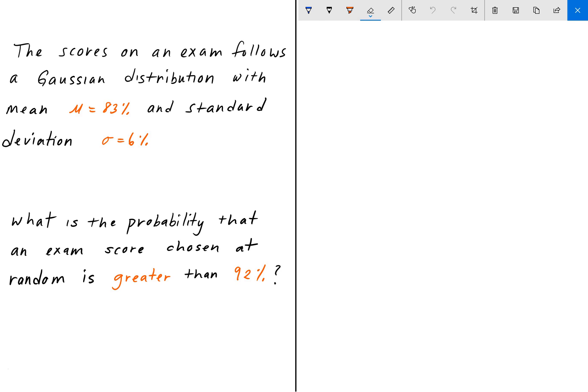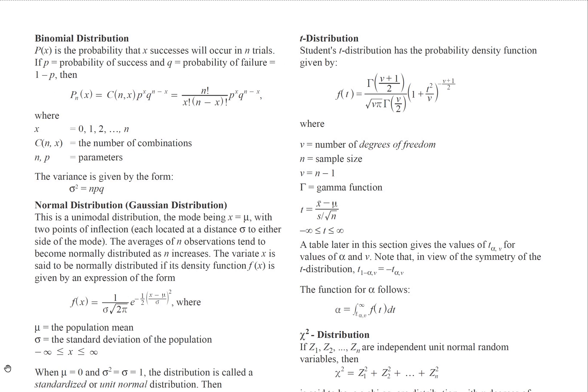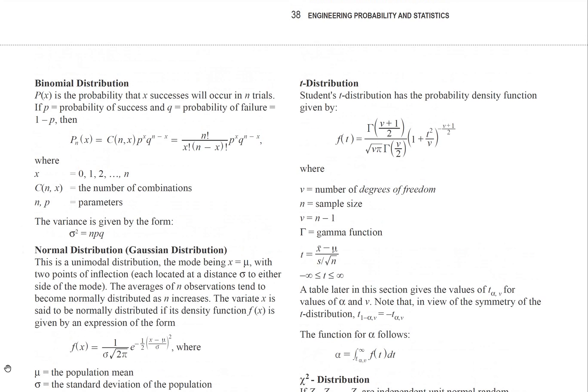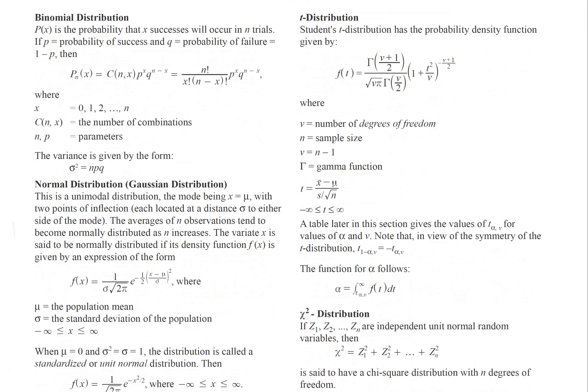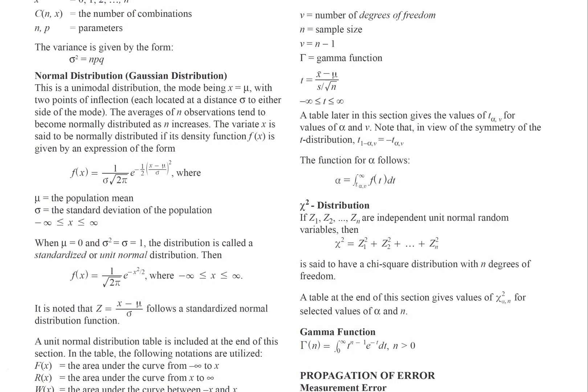To solve this, we go to the FE handbook. Here, again in the engineering probability and statistics section, we have the definition of a normal distribution or a Gaussian distribution.